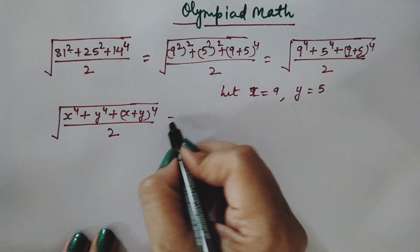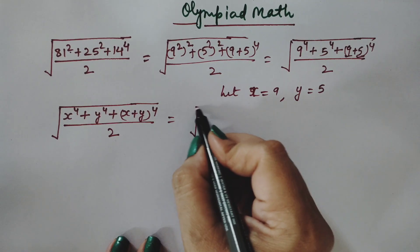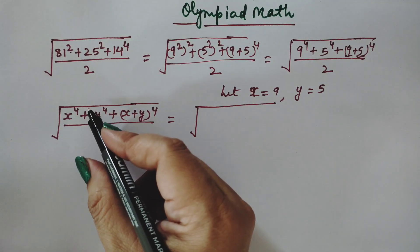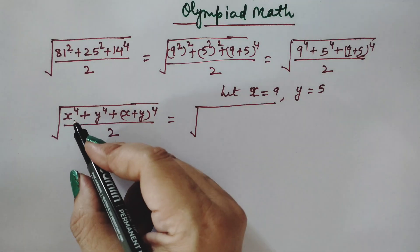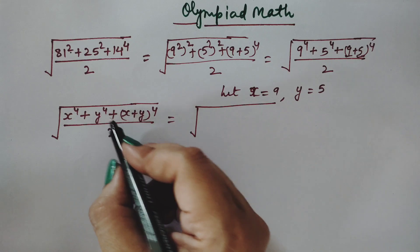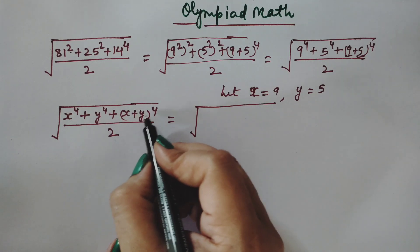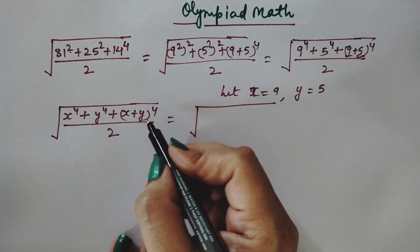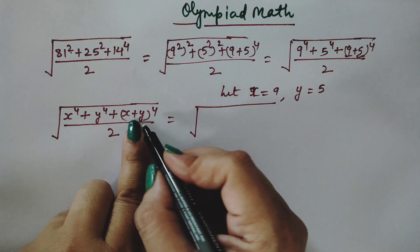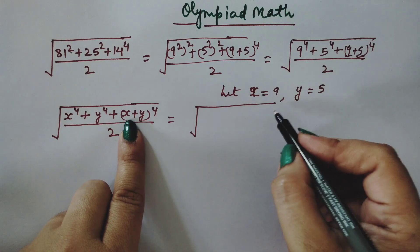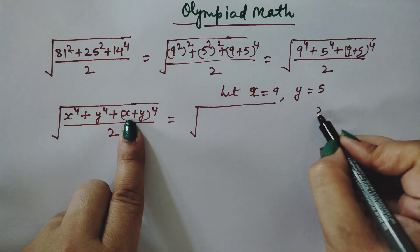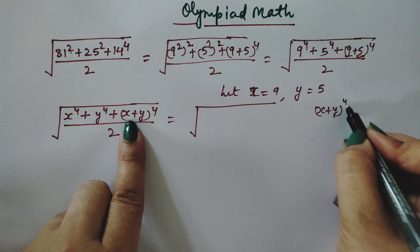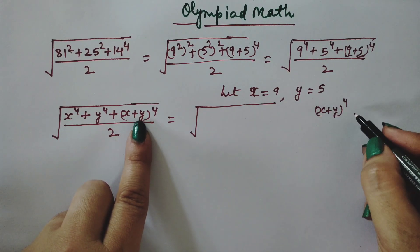We now need to expand (x+y) to the power 4. To solve x⁴ + y⁴ + (x+y)⁴, we will use the binomial theorem to expand (x+y)⁴.